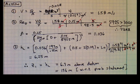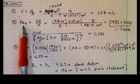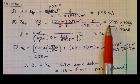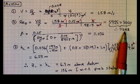All right, let's execute the plan. The mean velocity is 1.58 meters per second. The Reynolds number comes out to be 5,925, and this is greater than 3,000, which is our criteria for turbulent flow.